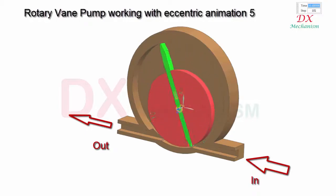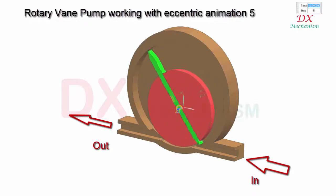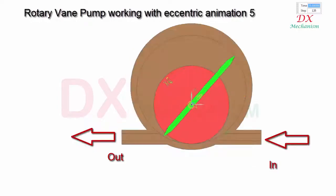When the red rotor rotates, the green part will slide at the vane of the rotor. The fluid will flow as the arrows direction.